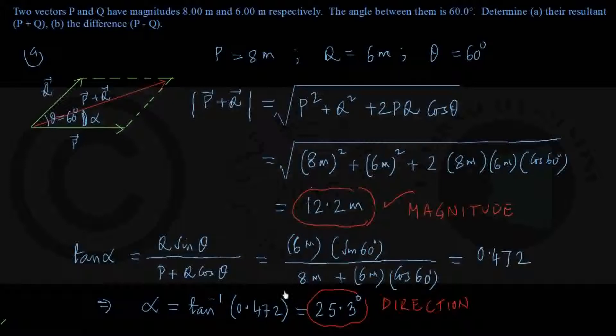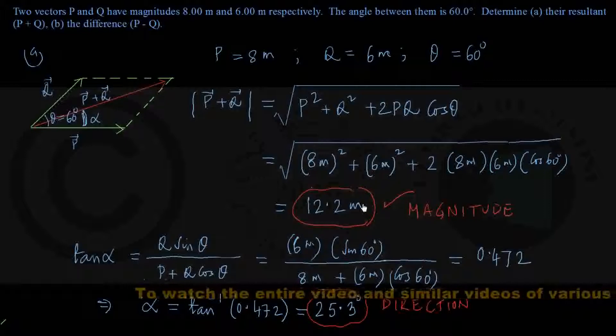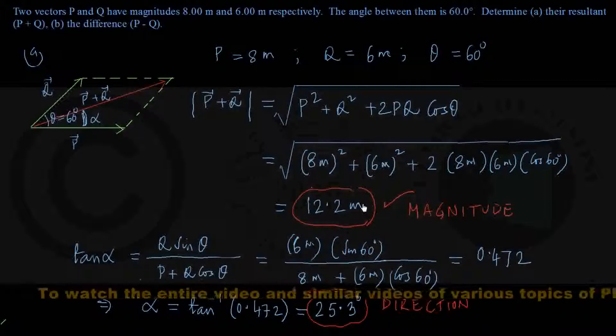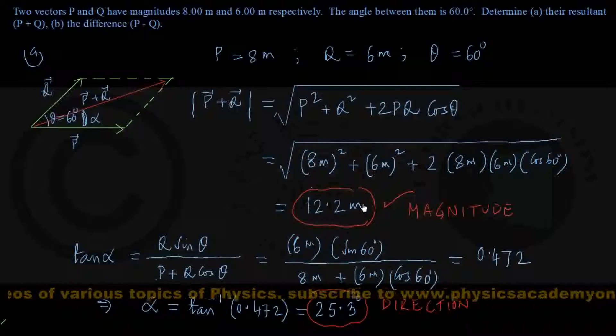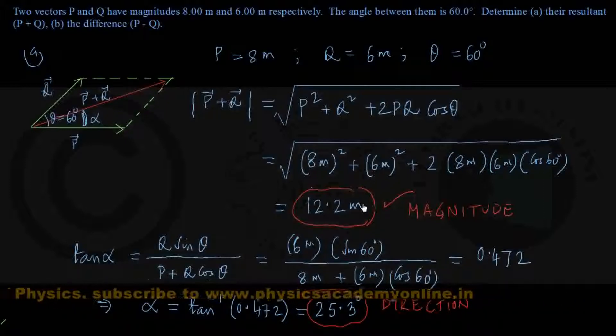This was the first part where we found magnitude and direction. When doing vector problems for the first time, make it a habit to find both magnitude and direction. Initially there's a tendency to focus only on magnitude, but remember almost all vector questions require both magnitude and direction.